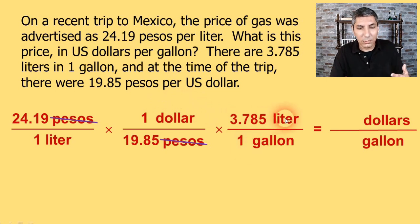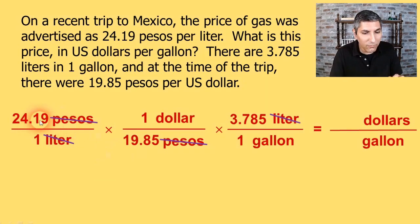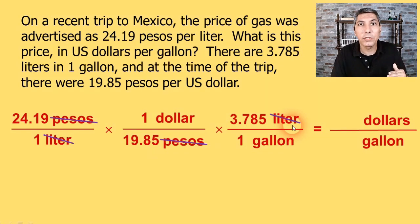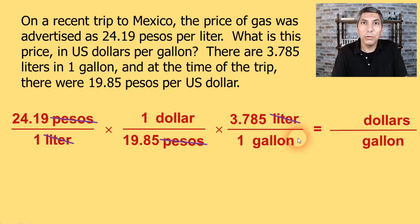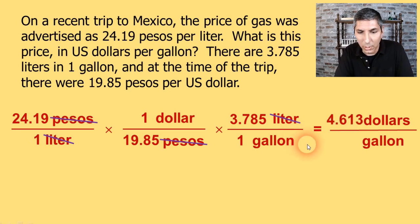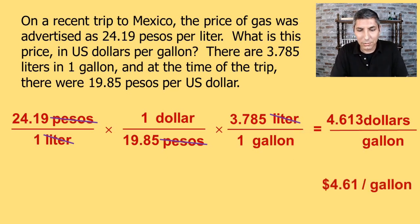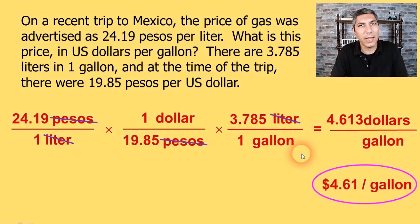On my calculator, I take 24.19 divided by 19.85 times 3.785. Remember: we divide by numbers in the denominator and multiply by numbers in the numerator. When you do that, you find an answer of about 4.613 dollars per gallon, or rounding to dollars and cents, that's about $4.61 per gallon.